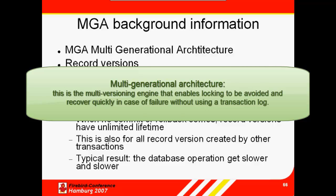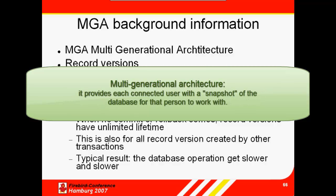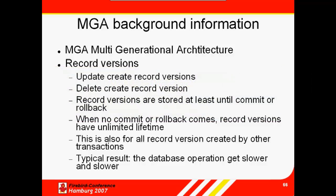Multi-generational architecture is basically another name for the multi-version engine that enables Interbase and Firebird to avoid locking and, at the same time, recover quickly in case of failure due to server crash or power outage, without using a transaction log. Multi-version concurrency control, abbreviated MCC or MVCC, is the method used to prevent two or more users changing a single dataset at the same time. It provides each user connected to the database with a snapshot of the database for that person to work with. Any changes made will not be seen by other users until the transaction has been committed. Firebird and Interbase implement this architecture using record versions.